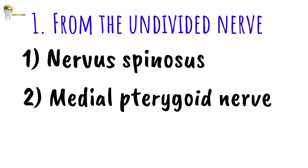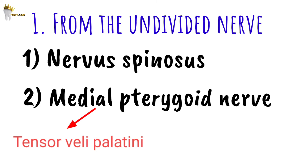The second branch is the medial pterygoid nerve. This nerve is motor to the medial pterygoid muscle, and it also gives off small branches that are motor to tensor veli palatini and tensor tympani.